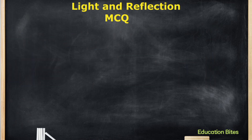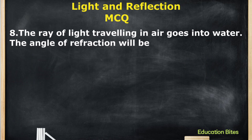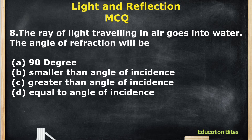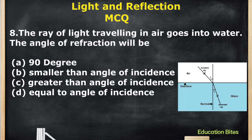The next question: A ray of light traveling in air goes into water. What will the angle of refraction be? When a ray goes from a rarer medium to a denser medium, it always bends towards the normal. So the answer is: smaller than the angle of incidence.